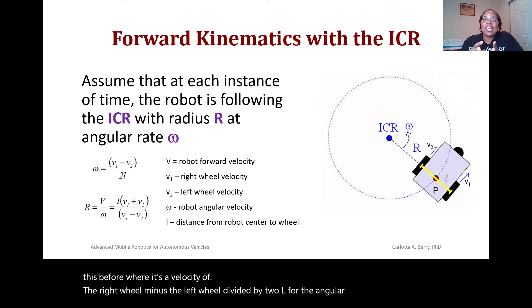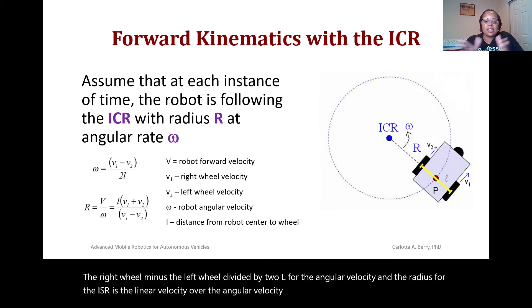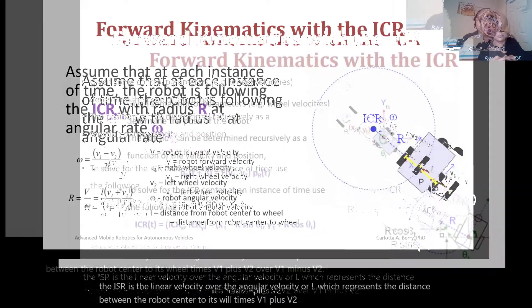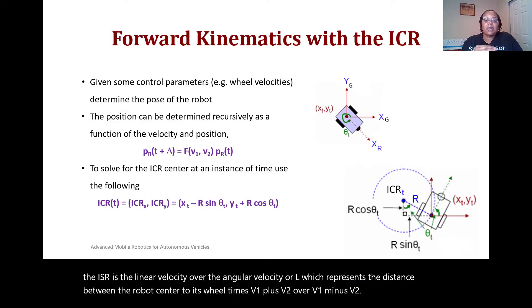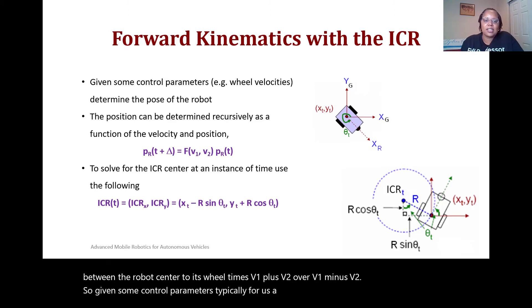The radius R for the ICR is the linear velocity over the angular velocity, or L times (v₁ + v₂) / (v₁ − v₂), where L is the distance from the robot center to its wheel. Given control parameters — typically wheel velocities for a differential drive robot — it is possible to determine the pose of the robot.